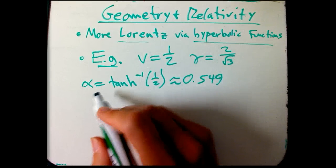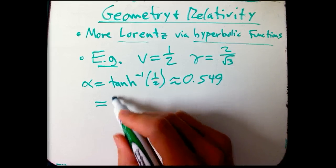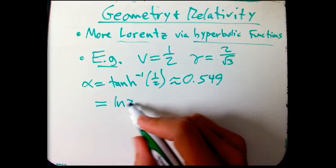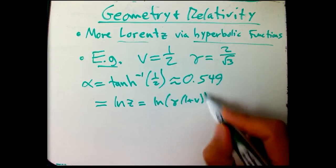If you want to go back to a little more first principles, maybe, or you don't have this on your calculator, we did have an alternate formula. It was ln of z, or ln of gamma times 1 plus V.